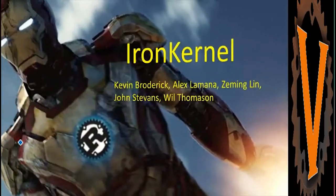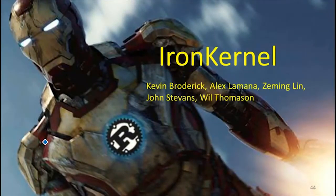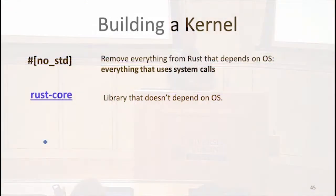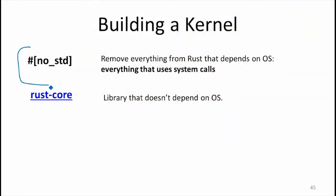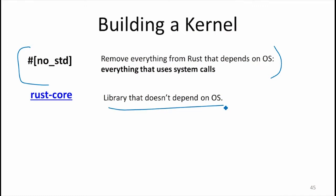We're going to talk about the kernel for Problem Set 4. This was a project that four students did last semester, built from other starting points. The first thing you have to do to build the kernel is remove everything that depends on the OS — everything in the standard library, everything that depends on a runtime system. People then built a library called Rust Core that provides some useful abstractions, all built without depending on an OS.